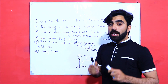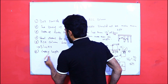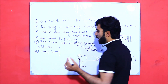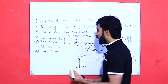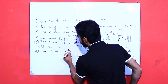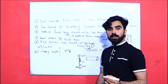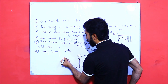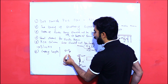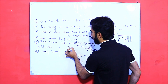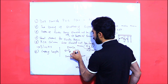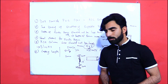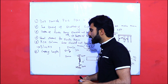Additionally, for lapping length, the minimum lapping length should not be less than 50d, where d is the diameter of the steel bar. For example, if you are using 20 mm diameter bars, the lapping length should be at least 50 multiplied by 20 mm, which gives 1000 mm or 1 meter.